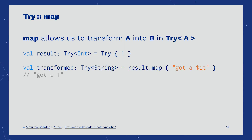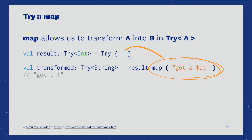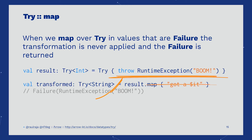With MAP, we act on the happy path. If the TRY is a failure, MAP will take no action and the failure will be returned instead.